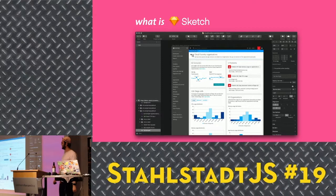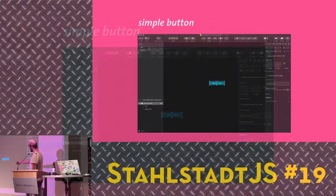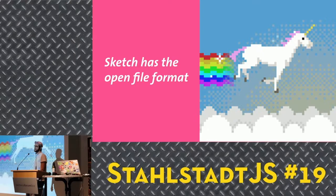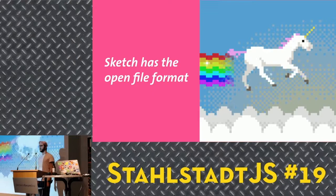In our example, the simple button: we have an artboard, a folder, a text, and a background. Really simple. Sketch has an open file format — that's the real benefit. If you unzip a Sketch file, you get a bunch of JSON files. And we all know JSON, so maybe that's something familiar — we can work with that.